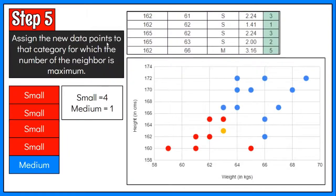Step 5: Assign the new data points to the category for which the number of the neighbor is maximum. Remember that a new case is assigned to the class which has the most representatives within the nearest neighbors.